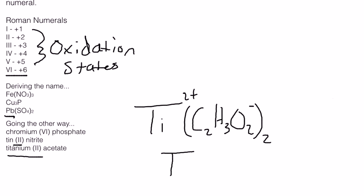So you would have Ti, and in parentheses, C2H3O2, outside of them, 2. And that would be our final compound for titanium.